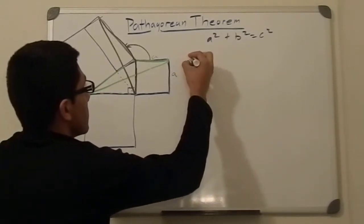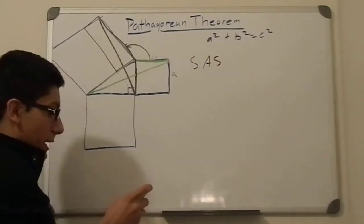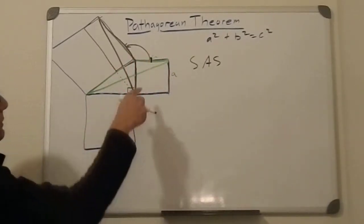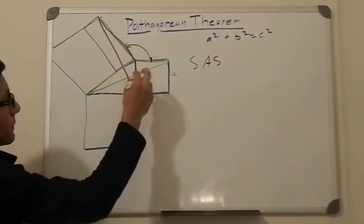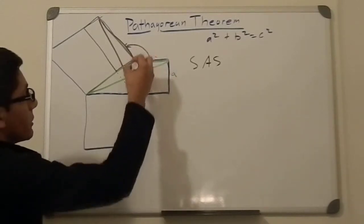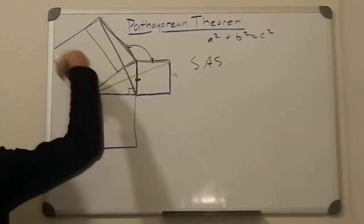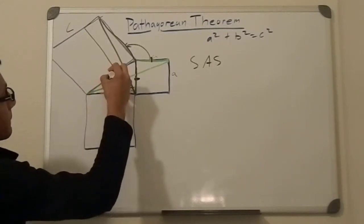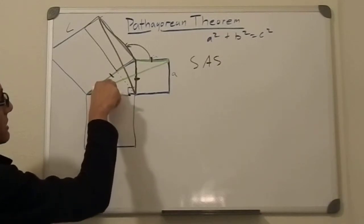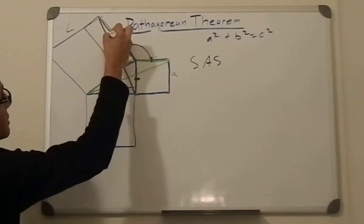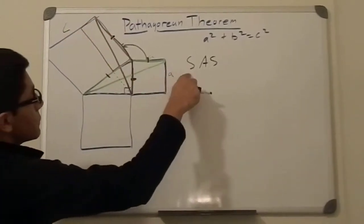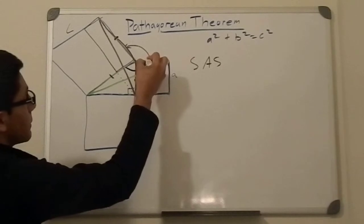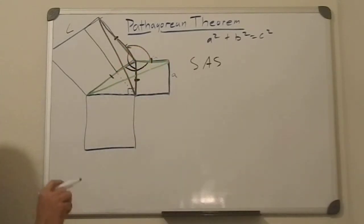The approach is side-angle-side from geometry. This side of triangle green and this side of triangle black — do you see? Both of these sides come from square C. Triangle green shares one side of square C and triangle black shares another side of square C. So we have two sides established; now all we have to prove is that the included angle here is equal to this angle here.